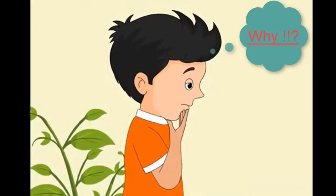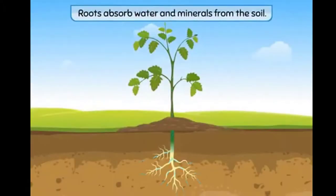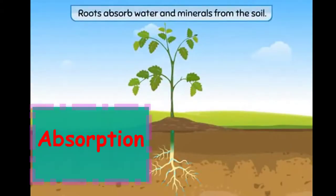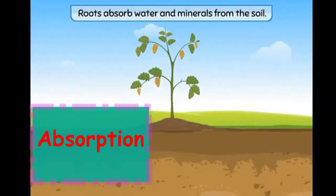Can you think of the reason why the plants died? Roots absorb water and minerals for the plant from the soil. In the absence of roots, the plants could not get water and died.